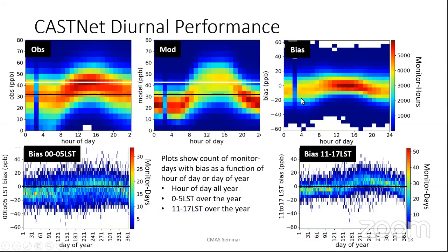In the early morning there is a low bias, but by the time we get to midday, that low bias is largely gone. We have a density of observations that are unbiased. And again, as we move into the late night, we start to get lower biased.